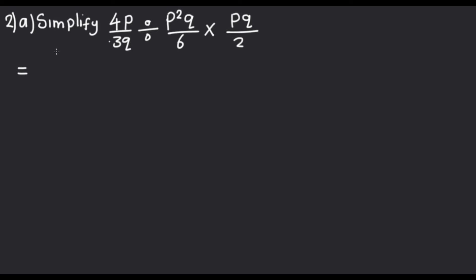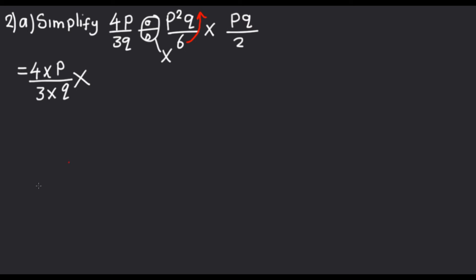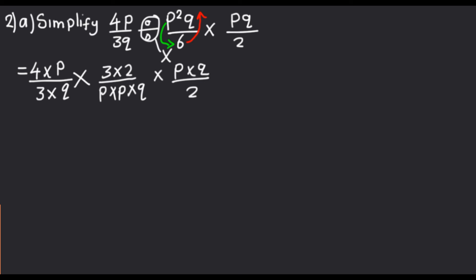So what I'm going to do is expand. Instead of writing 4P, I'll say 4 multiplied by P over 3 multiplied by Q. Then we change this into multiplication, and we flip the fraction so the denominator becomes the numerator and the numerator becomes the denominator. Instead of writing 6, that's 3 multiplied by 2 — I'll break the 6 into two numbers — divided by P squared, which I write as P multiplied by P, times Q over 2.